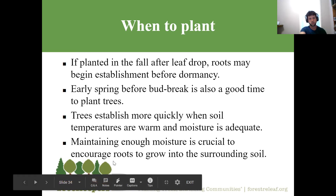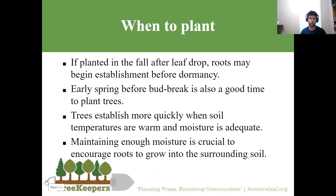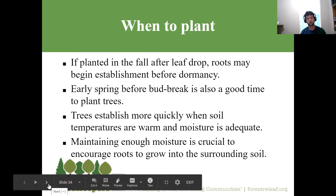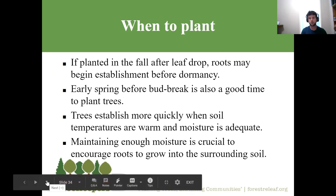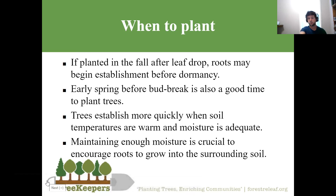Maintaining enough moisture is always crucial. A great thing about fall planting is that trees without leaves have almost no transpiration — water loss slows dramatically. You can water it in, then water once a week for the first few weeks and leave it until spring when it starts to leaf out. In summer, you immediately need to pump water through the tree. Spring is great because rainfall typically waters it in for you.